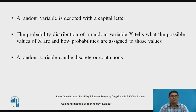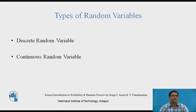A random variable is denoted with a capital letter. The probability distribution of a random variable X tells what the possible values of X are and how probabilities are assigned to those values. A random variable can be discrete or continuous — there are basically two types: discrete random variable and continuous random variable.